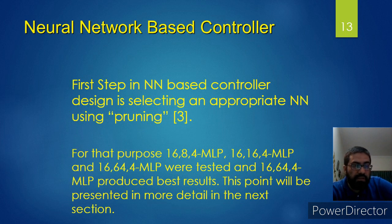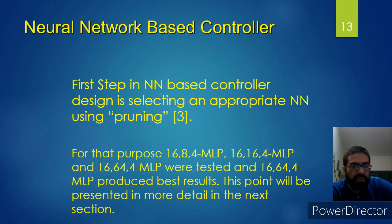The first step in a neural network based controller design is selecting the appropriate neural network structure — the number of neurons, number of layers, etc. In my research work, I tried several different structures: 16-8-4, 16-4, 16-64-4, and so on. The 16-64-4 structure produced the best results.